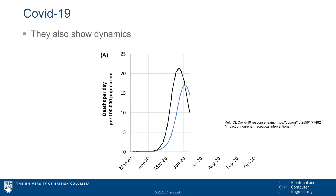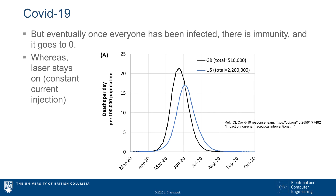Just like in the case of the laser, we see that there can be dynamics in the time domain. In the case of a pandemic, if no government action is taken and there is no vaccine available, eventually almost everyone will be infected and either die or recover. For those that have been infected and have recovered, there is immunity, and hence the steady state is eventually for the death rate to go to zero.